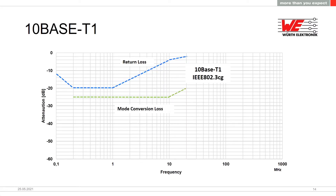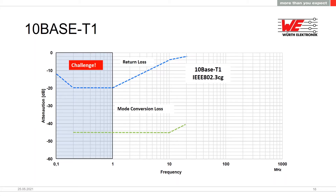This slide shows the IEEE 802.3 limits for 10BaseT1L — specifically return loss and mode conversion loss limits. The mode conversion loss limit is at -25 dB. A more realistic value for good signal stability is a mode conversion loss of -45 dB. In our measurements we try to be better than these two limit lines. The challenge for 10BaseT1 is the deep frequencies from 100 kHz to 1 MHz — this is really challenging, as the next slides will show.